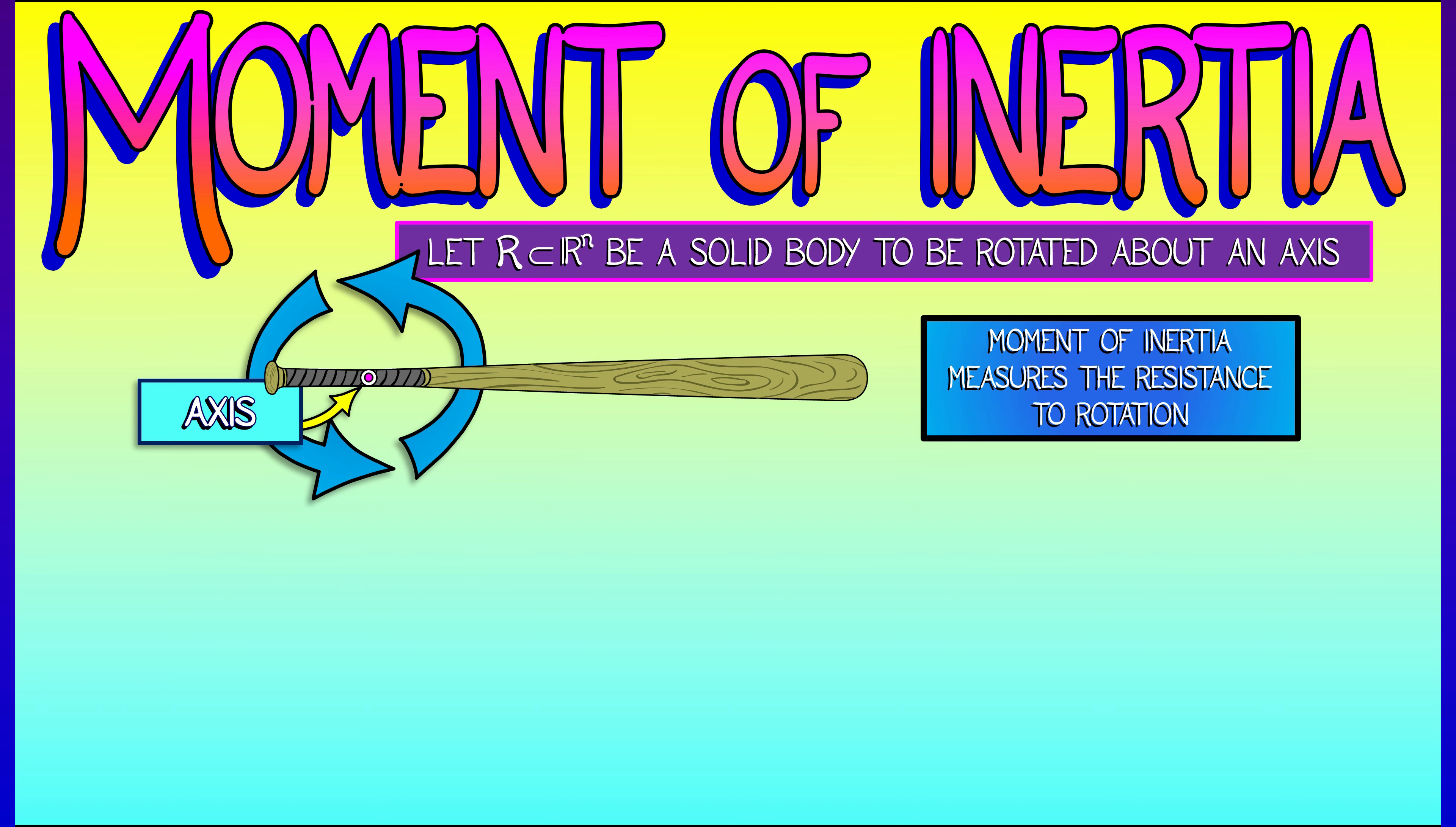Now, one of the things that is really nice about this is it has a strong physical intuition to it. Let's say you take a couple of different bodies that all have the same mass, but have that mass distributed differently with respect to distance to the axis about which it's rotating.